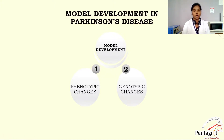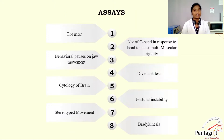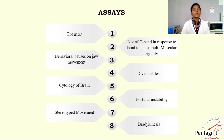Phenotypic changes include abnormalities in body posture, tremor, muscular rigidity, movement loss, and anxiety, which are observed with the progression of the disease model. The assays used to validate these phenotypic changes are: resting tremor, number of C-bends in response to head touch stimuli and muscular rigidity, number of jaw pauses or uncoordinated movement, dive tank test, cytology of the brain, postural instability, stereotype movement, and bradykinesia.